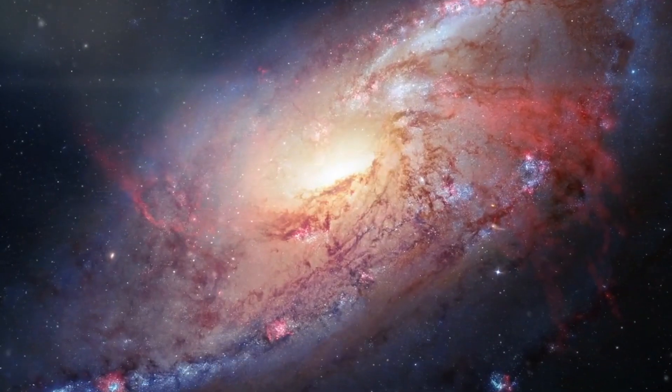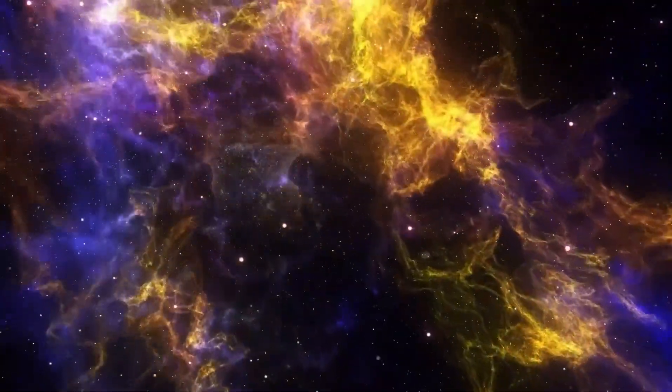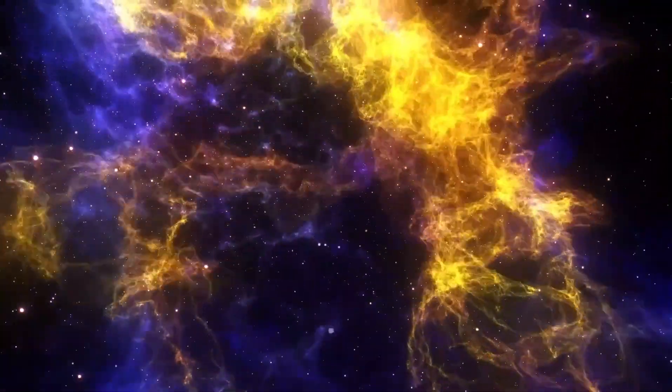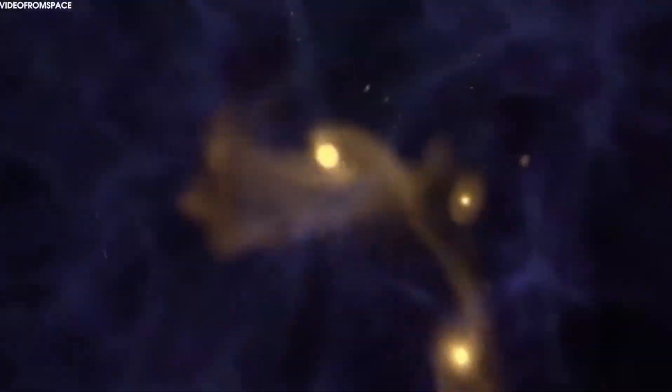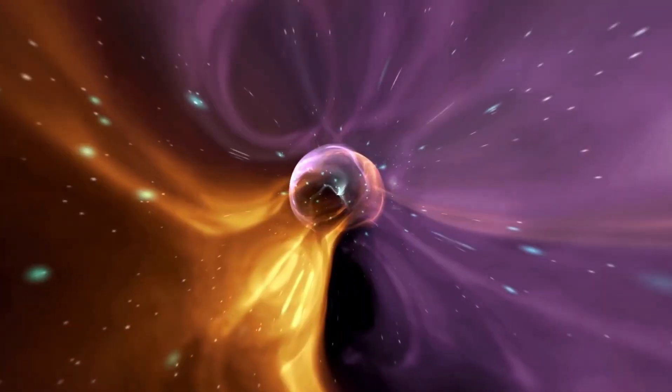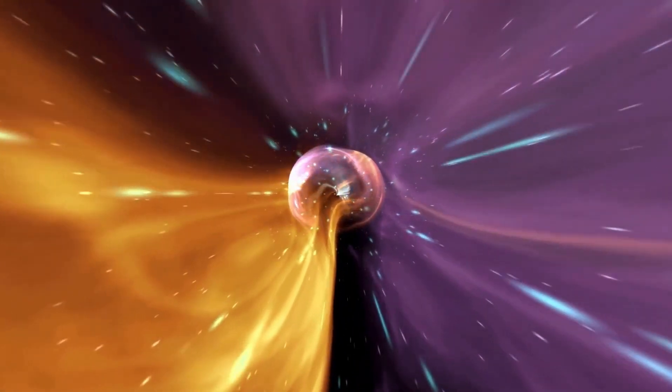At 6.5 m wide, Webb's mirror is almost three times the size of Hubble's, which is just 2.4 m wide. Not only can James Webb detect objects 100 times fainter than Hubble can, but it is also far more sensitive in the infrared spectrum, enabling it to see in a broader range of wavelengths.